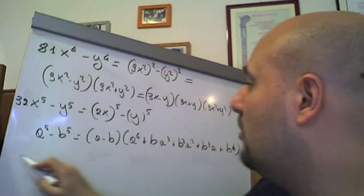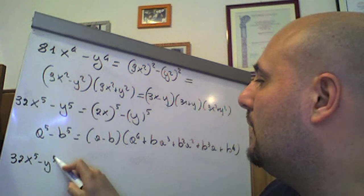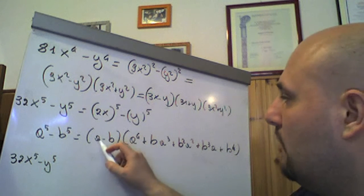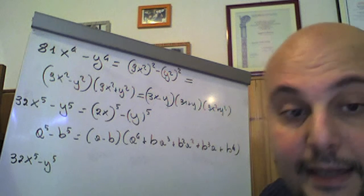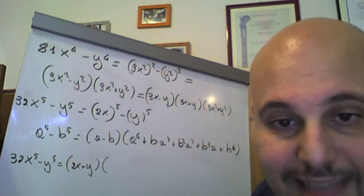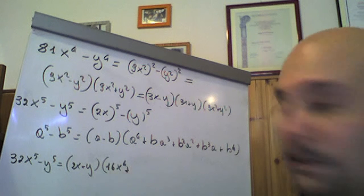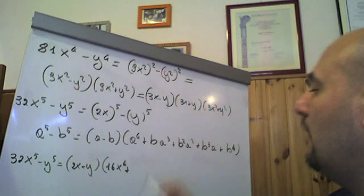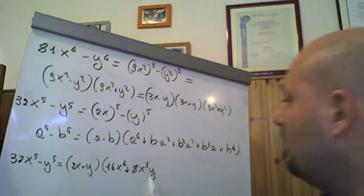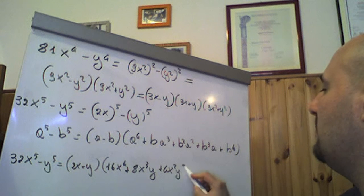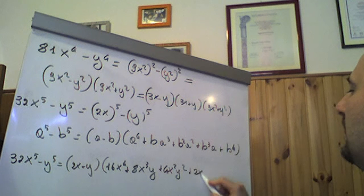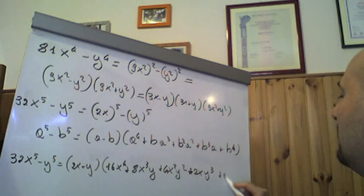Naturalmente in questo caso, il nostro 32x⁵ meno y⁵: y è il nostro b, siamo d'accordo. Il termine a nel nostro caso vale 2x, quindi attenzione che non dobbiamo mettere qua a, ma un bel 2x. E al posto di b un y. Quindi questo sarà (2x meno y), a meno b, che moltiplica — cominciamo — il 2x elevato alla quarta, quindi 16x⁴. Poi abbiamo più y che moltiplica il cubo di 2x: il cubo di 2x è 8x³, quindi 8x³y. Poi più y² per il quadrato di 2x, che è 4x², quindi più 4x²y². Poi dobbiamo mettere il cubo di y, che è y³, per 2x, quindi più 2xy³. E infine la quarta potenza di y, quindi più y⁴. Eccola qui la nostra scomposizione.